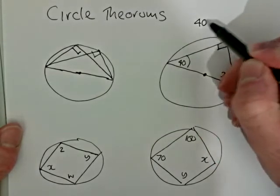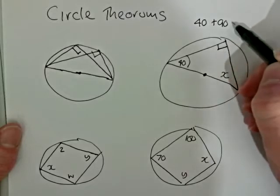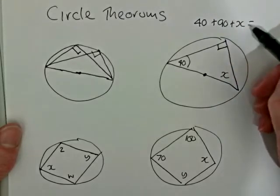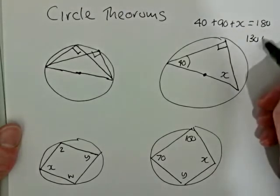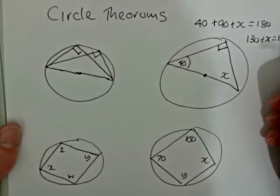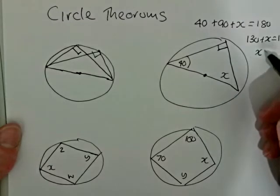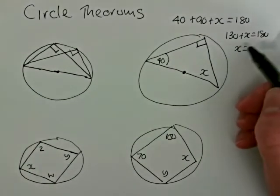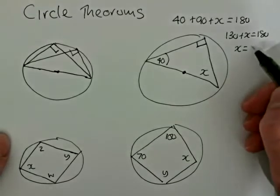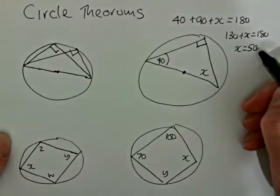So 40 plus 90 plus x equals 180. So that's 130 plus x equals 180. So x needs to be 50 degrees.